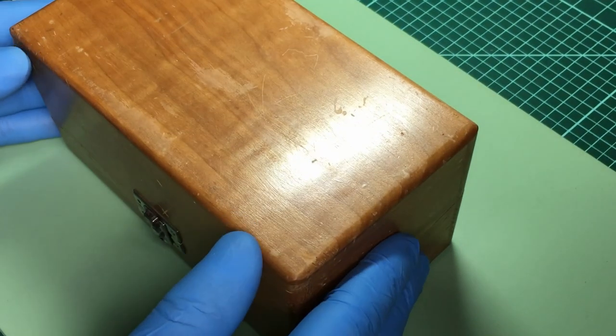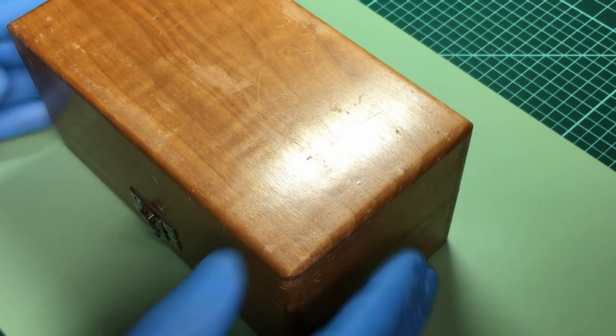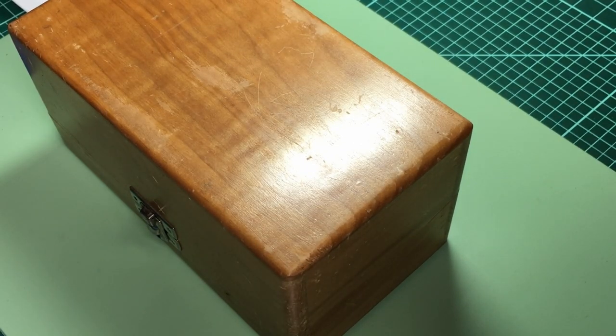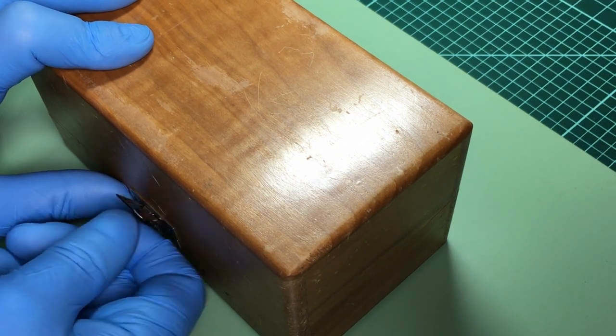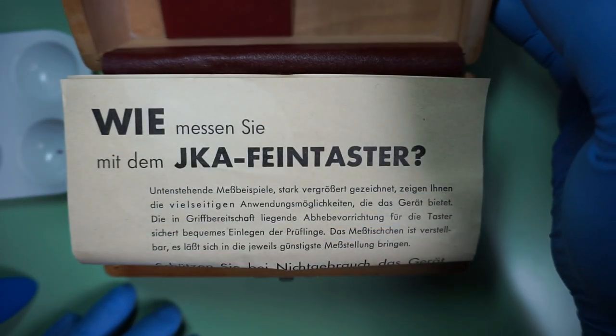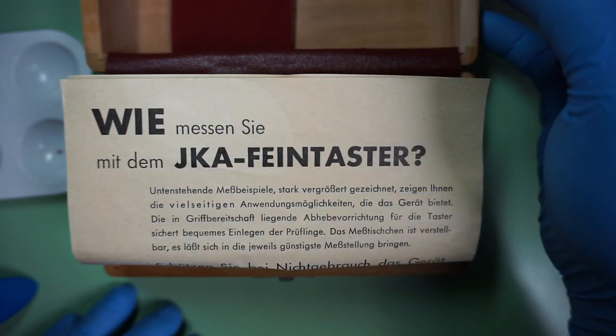Well, I'll tell you what, move this to the side. This is my newest tool and I really, really like this thing. It's a micrometer, it's a watchmaker's micrometer, and it is called the JKA Feintaster.